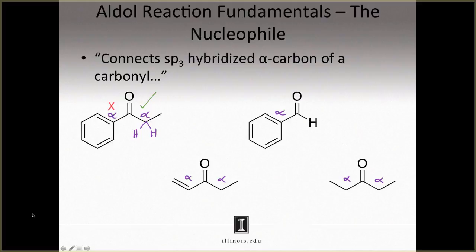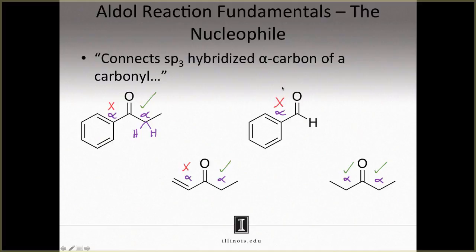You don't know how yet, but you will once we talk about the mechanism. Continuing with these structures and labeling them — red X's for alpha carbons that are not sp3 hybridized, and green check marks if they are — we see that some molecules like the upper left and bottom left have two alpha carbons, but only one is sp3 hybridized. The upper right molecule has no sp3 hybridized alpha carbons, so it cannot be used as a nucleophile. The structures on the left have one sp3 hybridized alpha carbon, and the bottom right structure has two, so all of these can be used as nucleophiles in an aldol reaction.